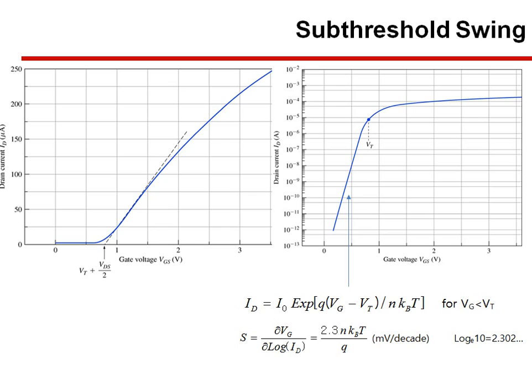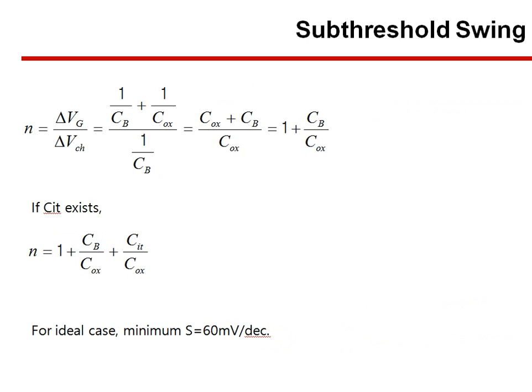When it is close to low, it cannot perform perfect operation. The flatband voltage operates as a component of the threshold voltage. When source and drain current flows, we replace the threshold voltage with a modified value.